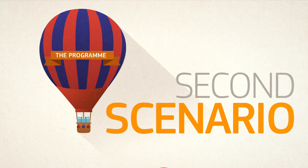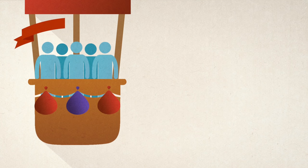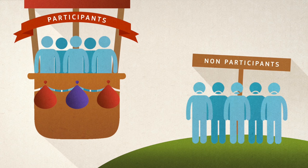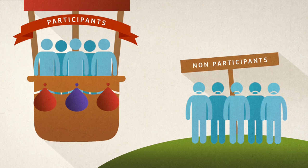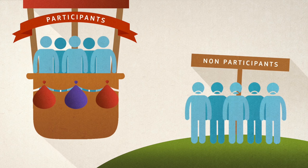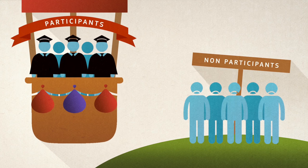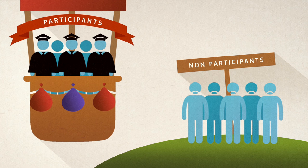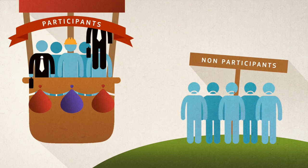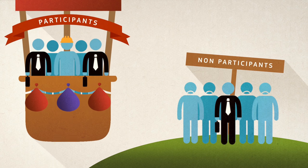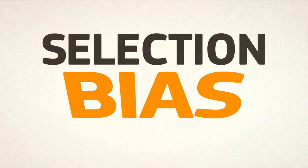Consider a second scenario, where we compare the employment status of those who participated in the training with those who did not. Can we do this? Yes, but this comparison would be misleading. Why? Because people who decided to participate in the training might have a higher level of education compared to people who decided not to. If they find a job, we don't know if this is due to the training or their higher level of education. This creates a bias known as selection bias.